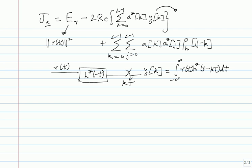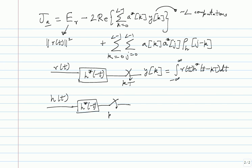The number of computations in the first sum is only order l — about l multiplications and l minus 1 additions. What about the second term? rho_h is more involved: take h(t), send it through the matched filter h*(−t), and sample. The Fourier transform of h*(−t) is H*(f). The Fourier transform of rho_h(k) will be (1/T) summation over m of |H(f − m/T)|^2, which is the aliased or folded spectrum.